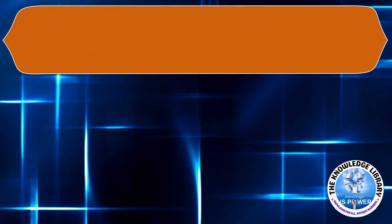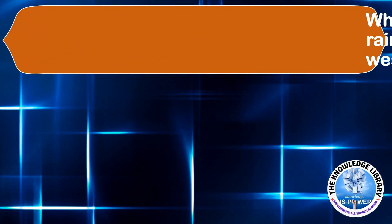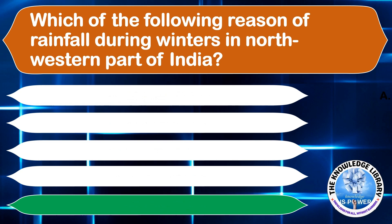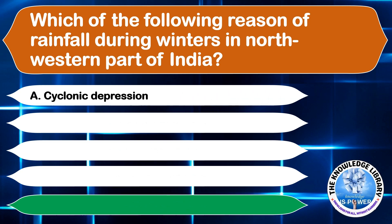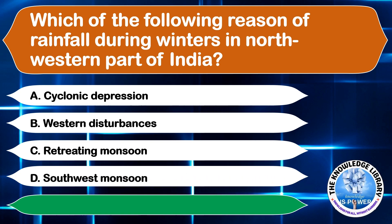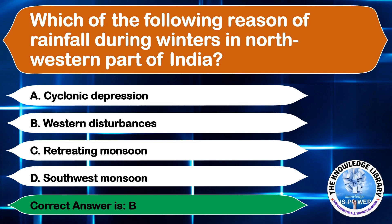Which of the following is the reason for rainfall during winters in the northwestern part of India? A. Cyclonic depression, B. Western disturbances, C. Retreating monsoon, or D. Southwest monsoon. The correct answer is option B, Western disturbances.